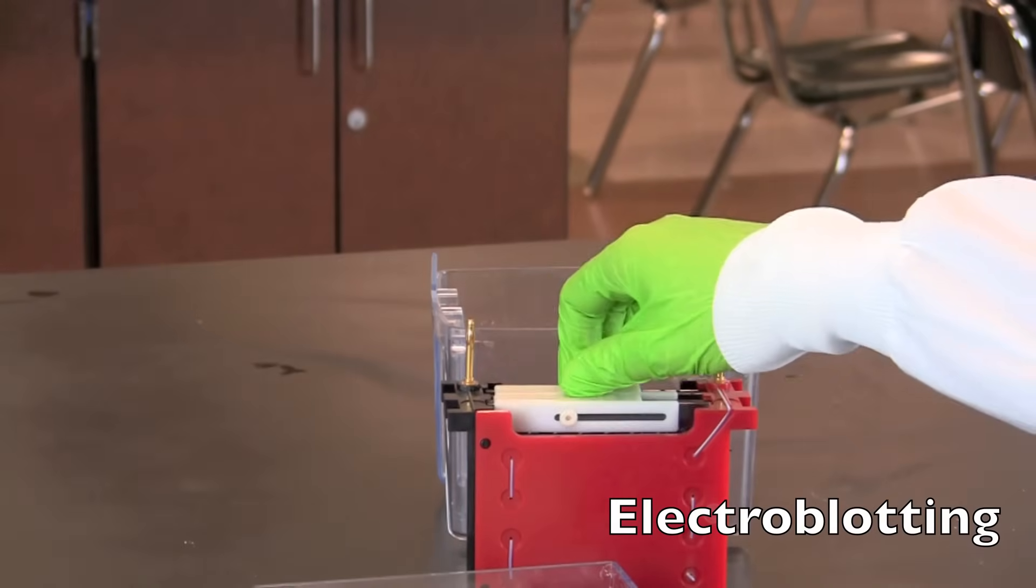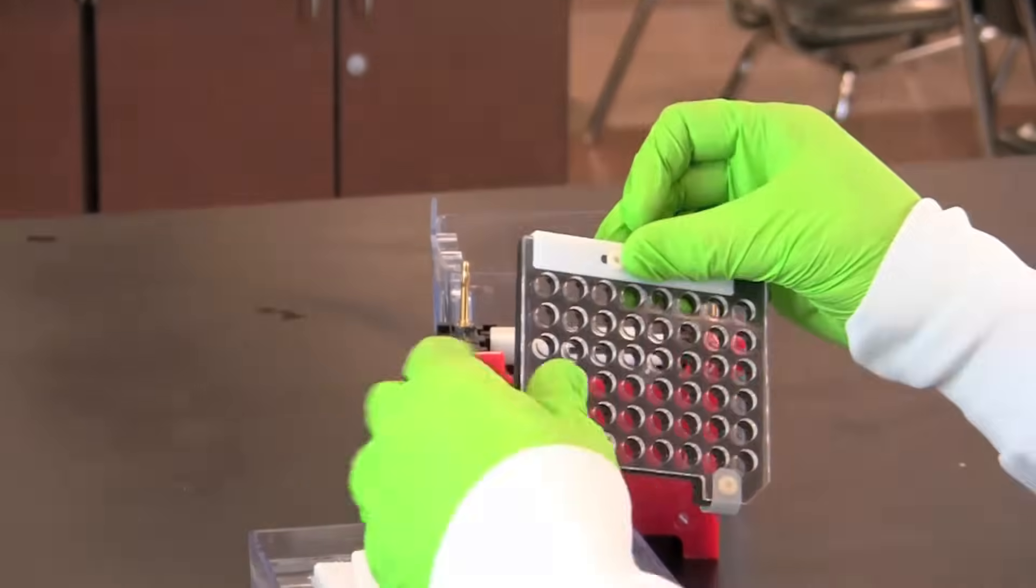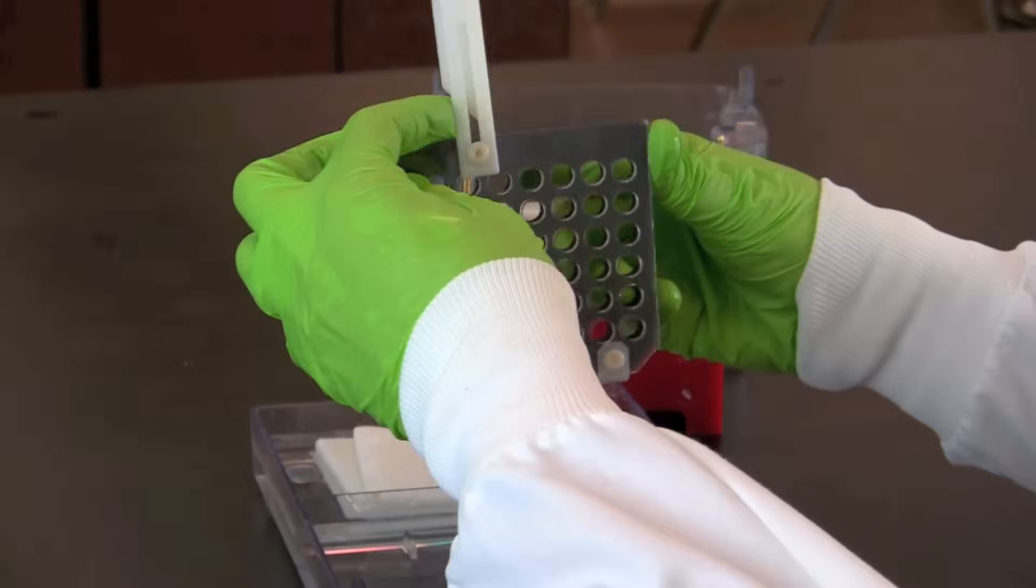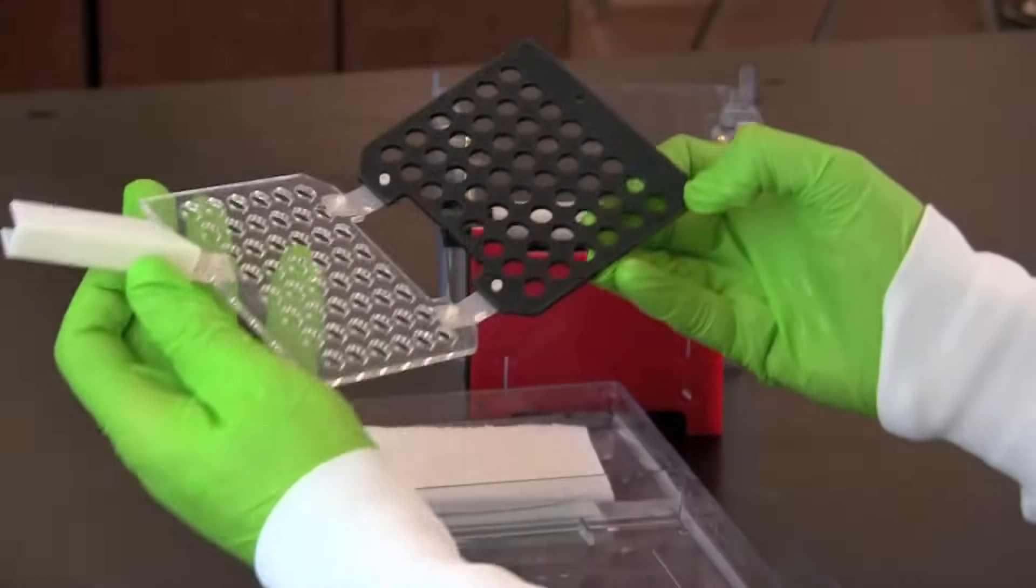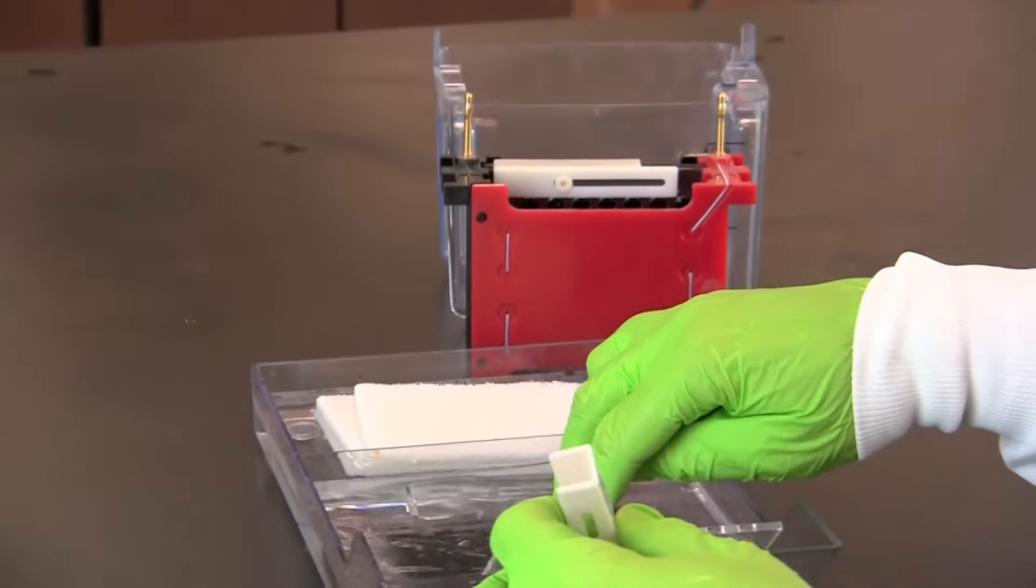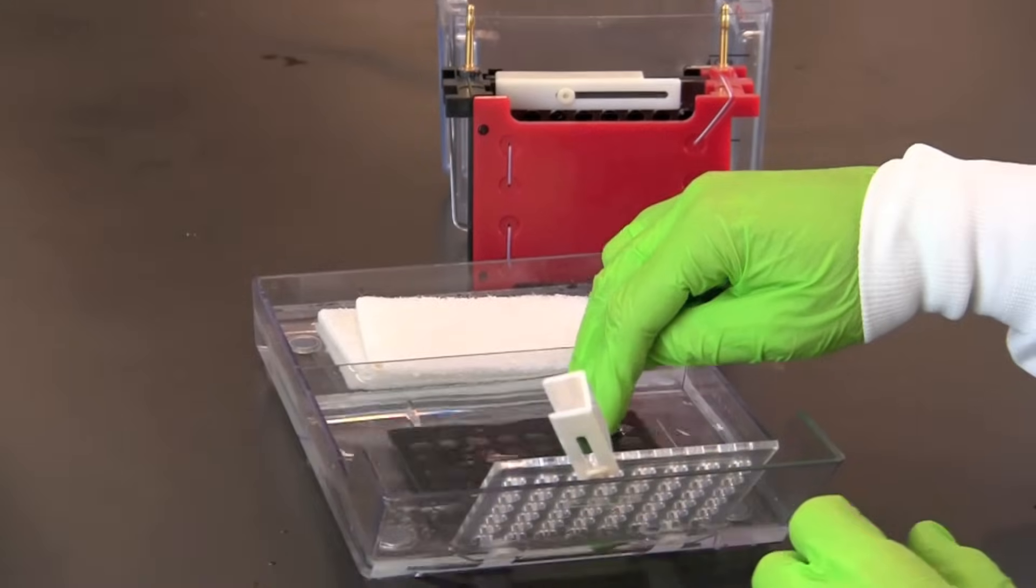To make a blotting sandwich, obtain a container large enough to fit the gel holder and add enough blotting buffer until the container is filled approximately one centimeter deep. Place the gel holder cassette in the container with the black side down and immersed in the buffer and the white side up and out of the buffer.